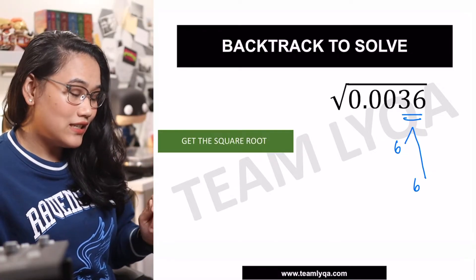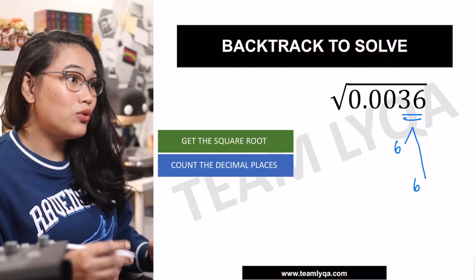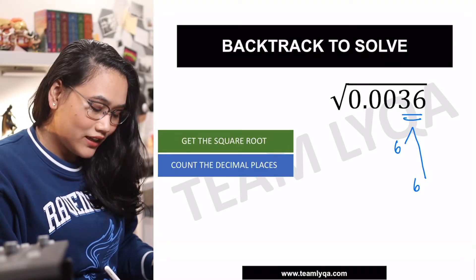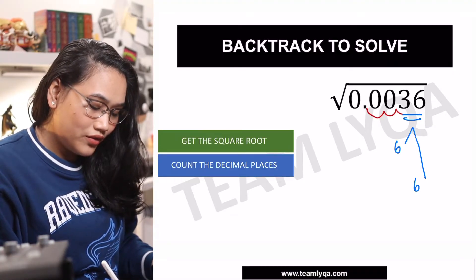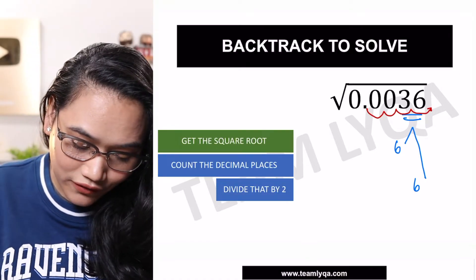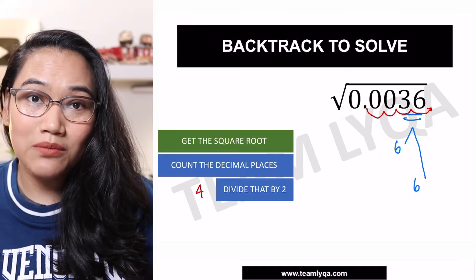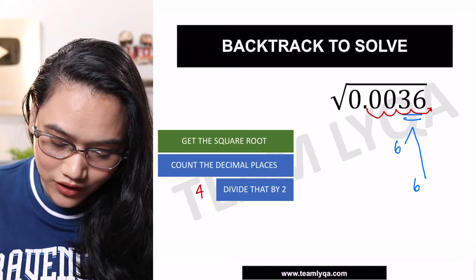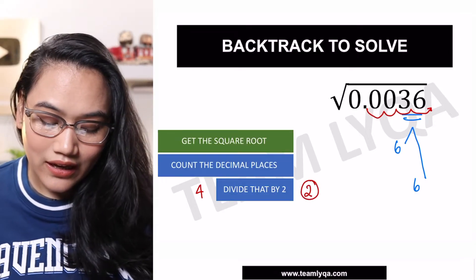Next, we're going to count the decimal places. Here, to form 36, our decimal places are 1, 2, 3, 4. We moved four times. That 4, we'll just divide it by 2. And that should give us 2.